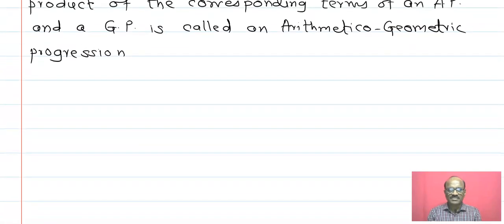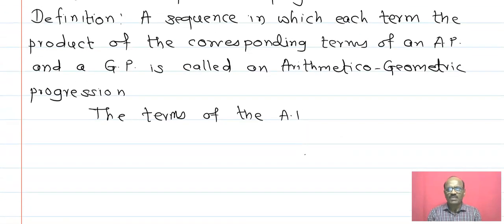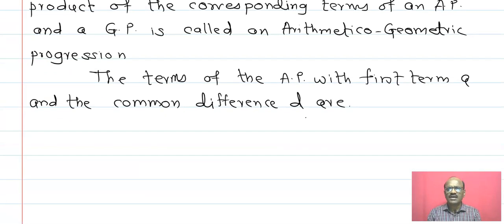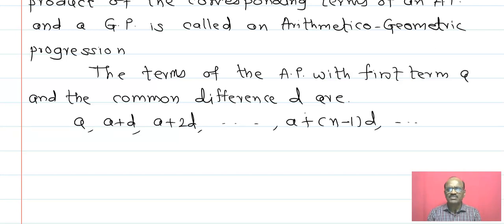Now we are discussing this chapter. It is very complicated compared to your 10th standard. The terms of AP with first term A and common difference D are: A, A+D, A+2D, and A+(N−1)D.